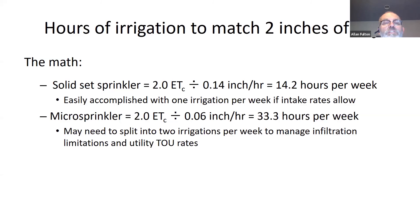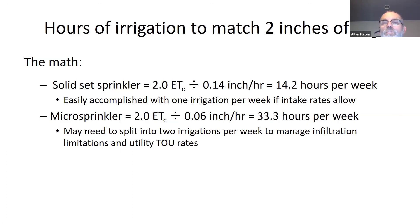Now in contrast, let's consider the microsprinkler system described earlier. The precipitation rate is 0.06 inches per hour, which equates to just over 33 hours per week to return that two inches of ET back to the orchard. This is a fairly long set for one application — one that could create runoff and might lead to some unwanted standing water. So it may be necessary to split the weekly irrigation need into two irrigations per week, roughly 16 to 17 hours each, maybe three or four days apart.